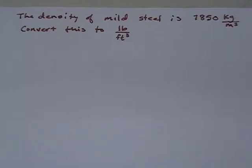The density of mild steel is 7850 kilograms per cubic meter. Convert this to pounds per cubic foot.